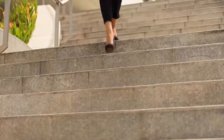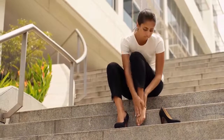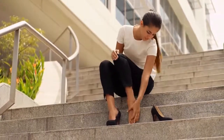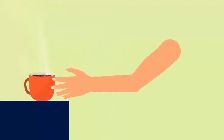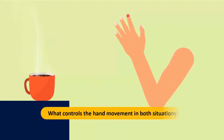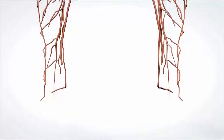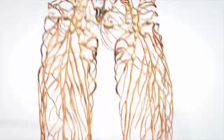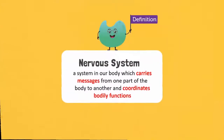When you injure your foot while walking, you feel pain, and your hand immediately reaches for the place of injury. When you touch a hot object, your hand automatically moves away. So what controls the hand movement in both situations? How does your hand know what to do? There is a system in our body which carries messages from one part of the body to another and coordinates bodily functions. This system is called the nervous system.